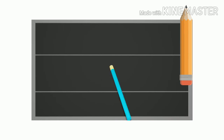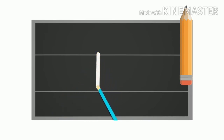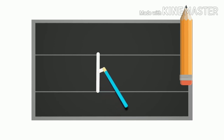Small h: start from the top and make a standing line to the bottom, then go to the middle and draw a curl reaching the bottom. This is your small h.